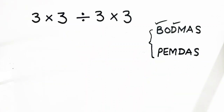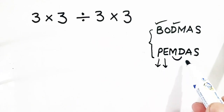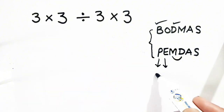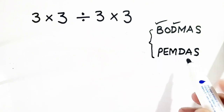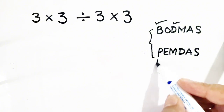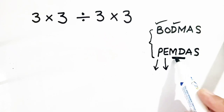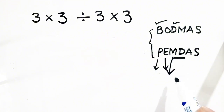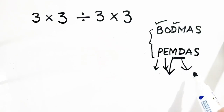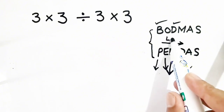Now I will apply PEMDAS principle. Parenthesis is not here, exponent is not here, so multiplication and division are here. PEMDAS says that multiplication is done first, then division. PEMDAS also says that the operation can be carried out from left to right.